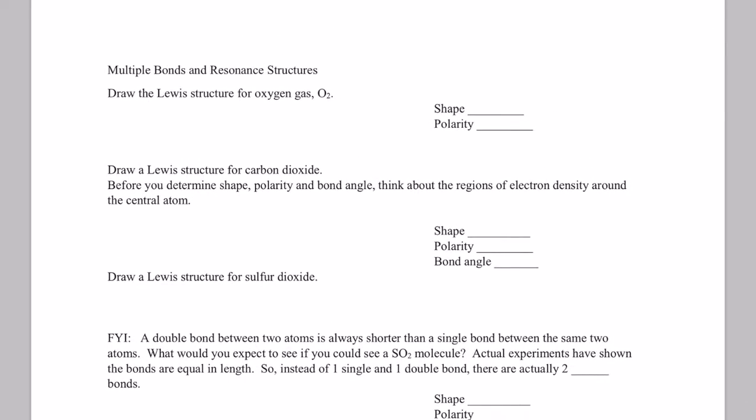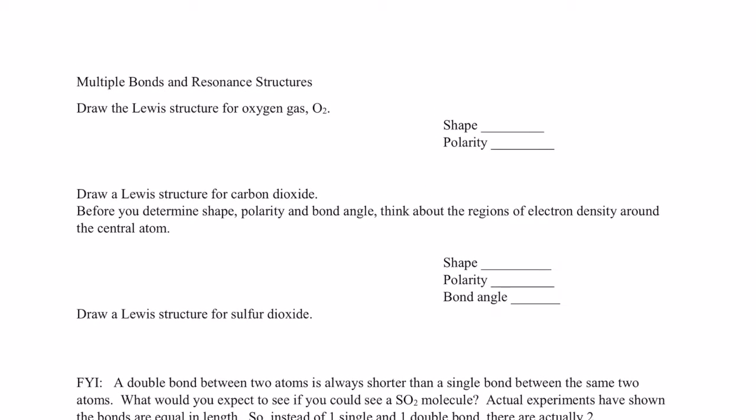All right, let's practice some more. And this time we're going to run into something called multiple bonds and then resonance structures. So if I asked you to draw the Lewis structure for O2, there are two oxygen atoms, right?